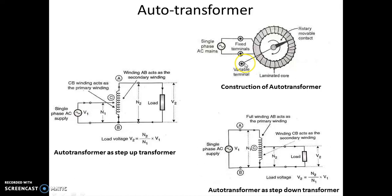Unlike a conventional transformer which has two windings — primary and secondary — this auto transformer has only a single winding which is wound around a laminated core. There is a movable contact which divides this single winding into two parts. The two fixed terminals act as the first winding, and the movable contact creates a second part which acts as the second winding.